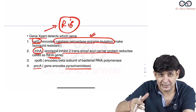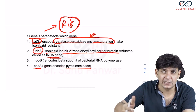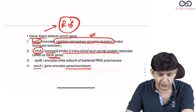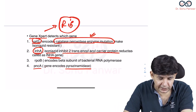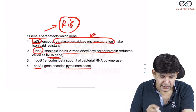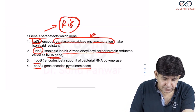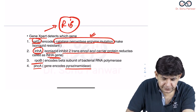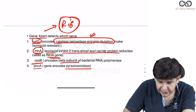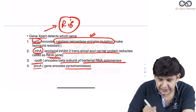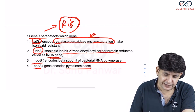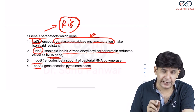KATG encodes the catalase-peroxidase enzyme; mutation in KATG is responsible for encoding the catalase-peroxidase enzyme mutation. So remember these names: KATG — catalase-peroxidase enzyme mutation. INHA. PNCA — pyrazinamidase. And RPOB, which encodes the beta subunit of bacterial RNA polymerase.